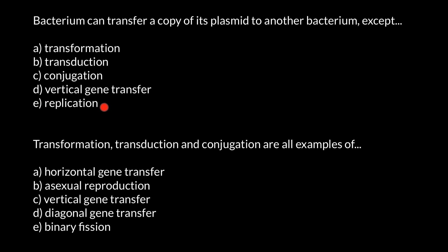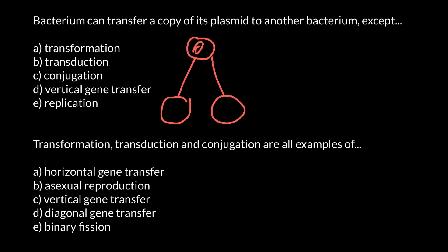Let me start from the end of this list: replication. As you know, bacteria replicate by binary fission, so one mother cell produces two daughter cells. The mother cell has its genome as a circular genome, plus it may also have circular plasmids, and these plasmids would also be shared by daughter cells. This is an example of vertical gene transfer, when genetic information is transferred from one generation to the next.